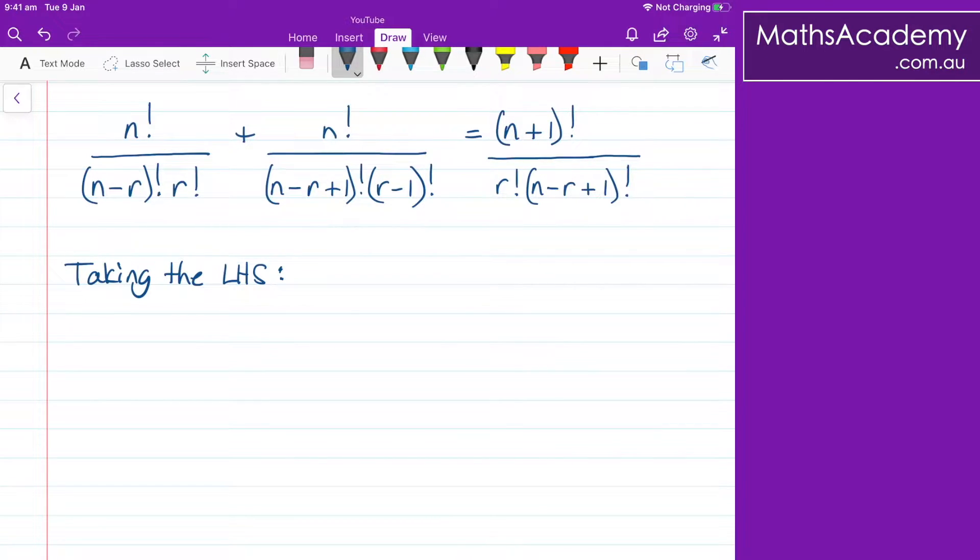Now my thought process when I see something like this is, well, I see two fractions on that left hand side. You can see I've written taking the left hand side because that's where we need to start. Now if I'm adding fractions, I need to have a common denominator. And it's exactly the same process here.